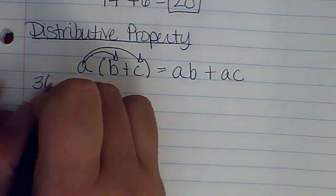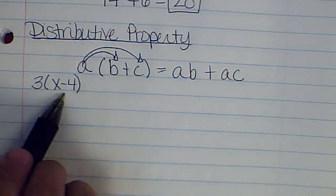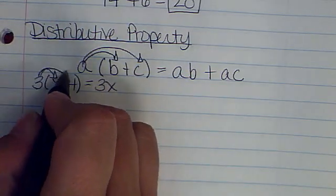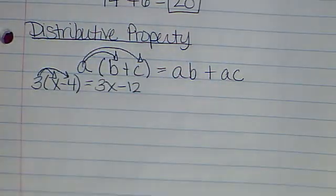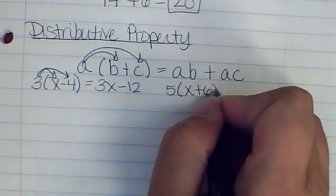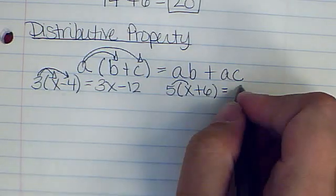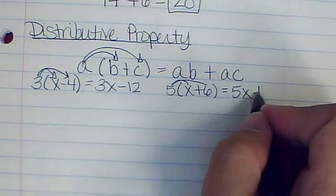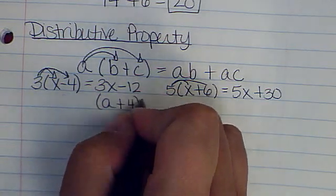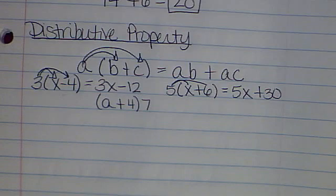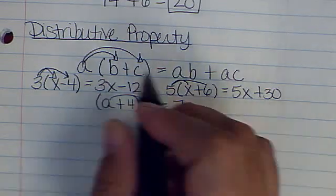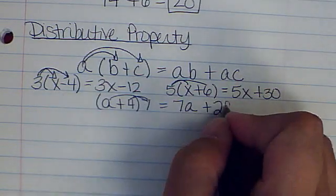Let's look at some problems. First: 3 times the quantity x minus 4. We distribute the 3: 3 times x is 3x, and 3 times negative 4 is negative 12. Second: 5 times the quantity x plus 6. Distributing: 5x plus 30. Third: a plus 4 times 7 — it's backwards but we still distribute: a times 7 plus 4 times 7.